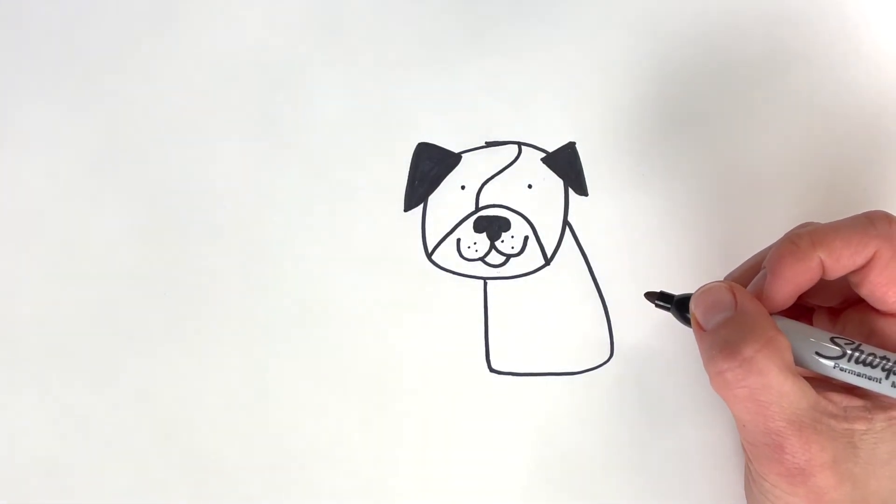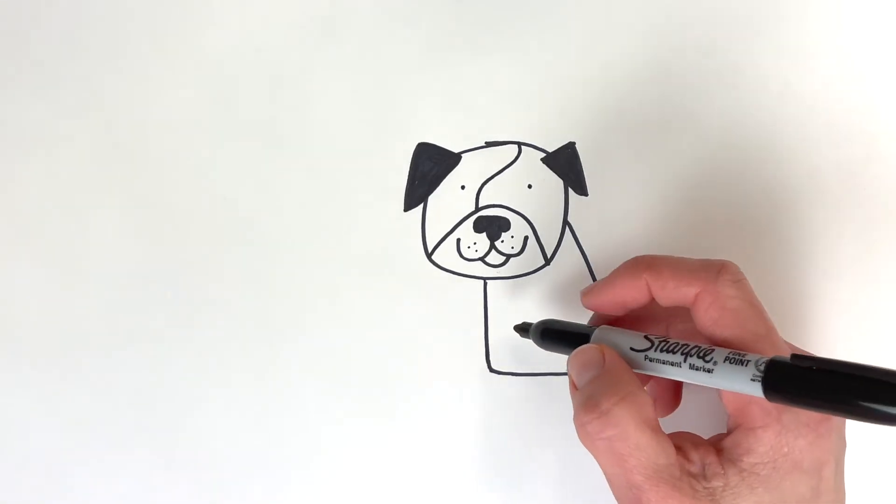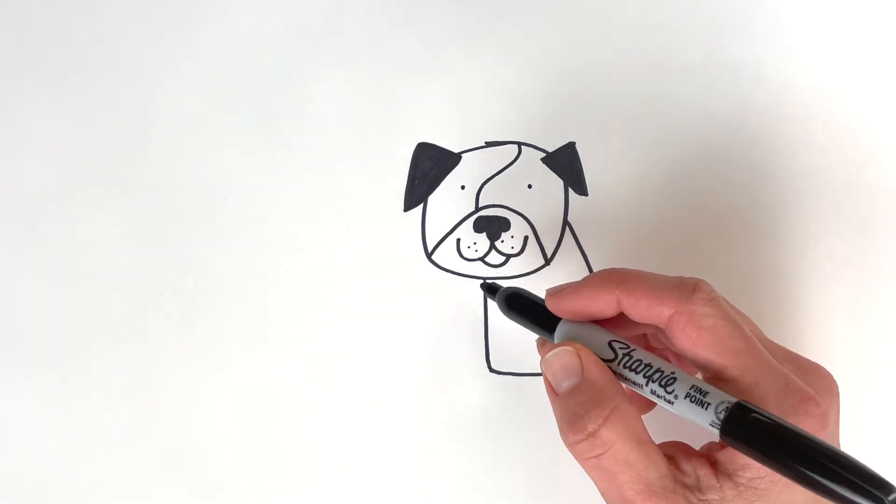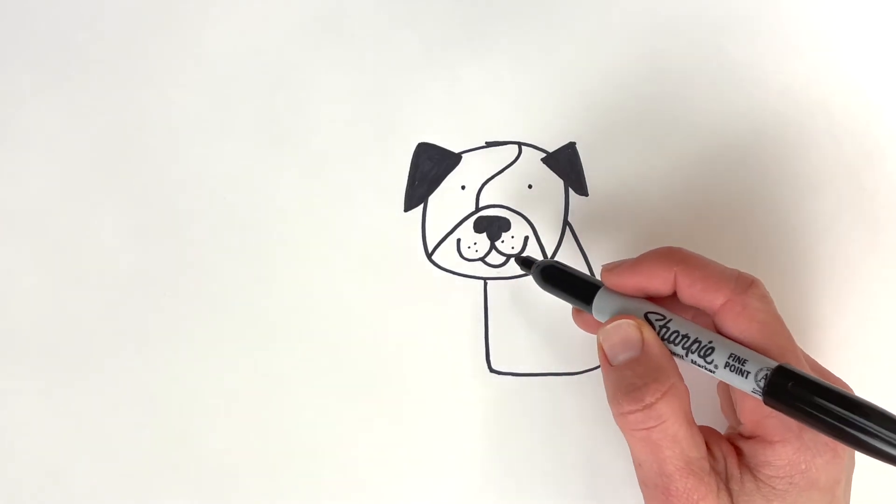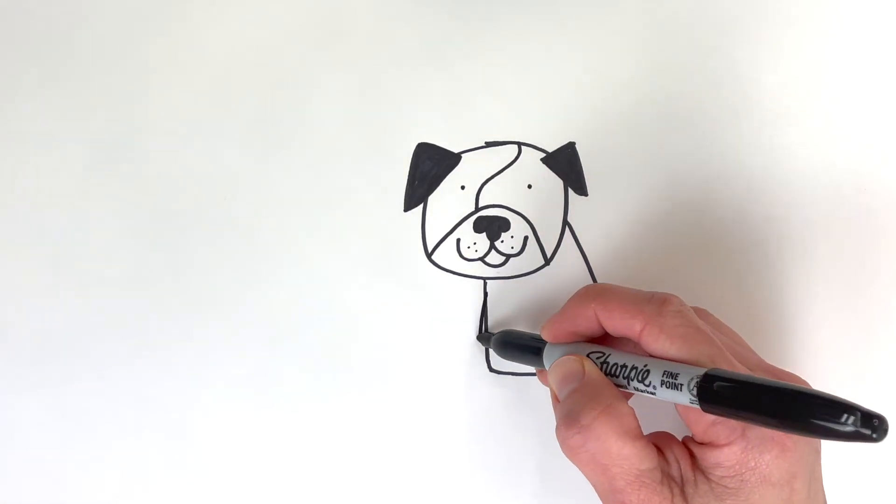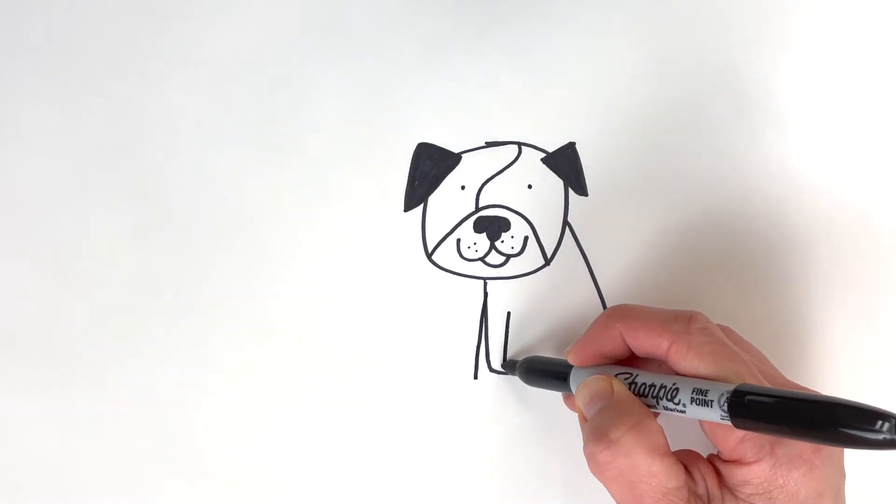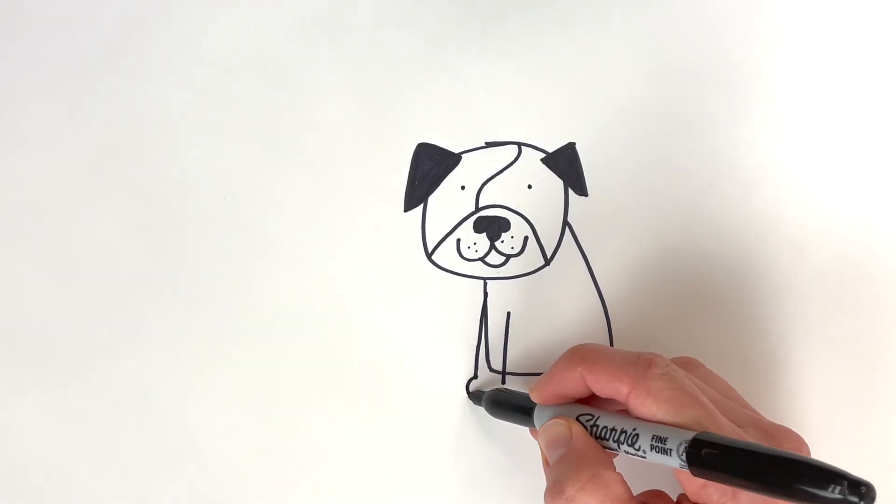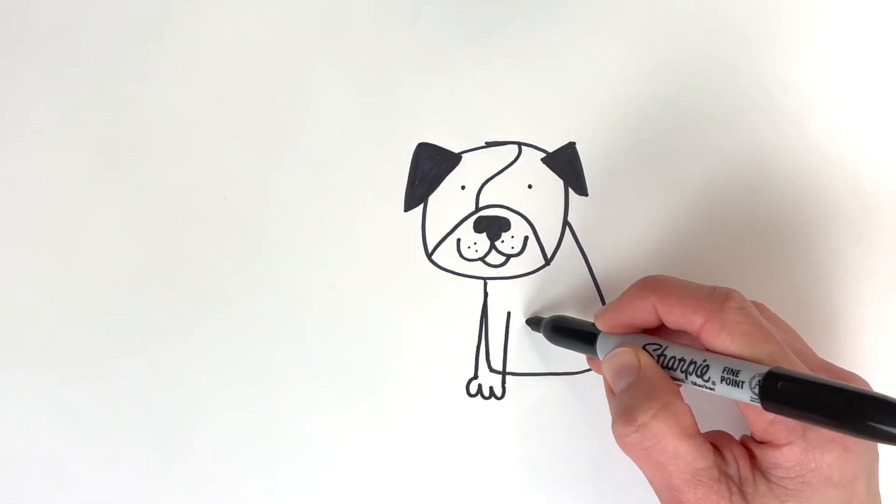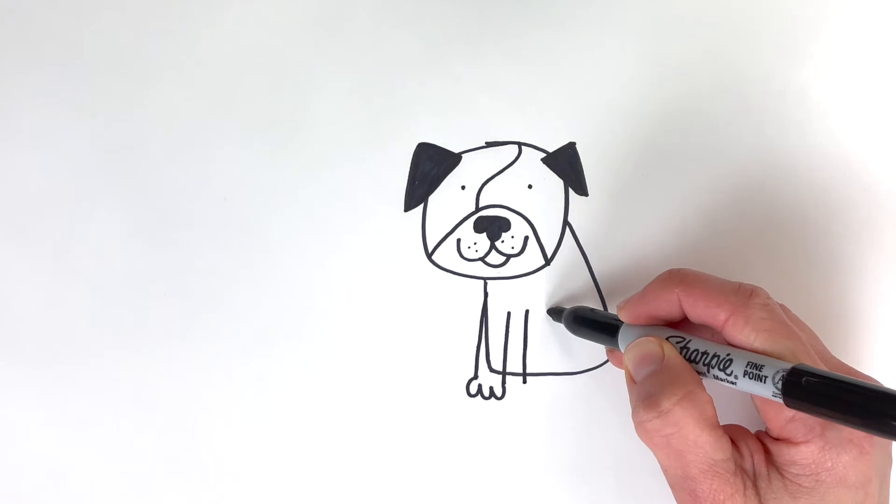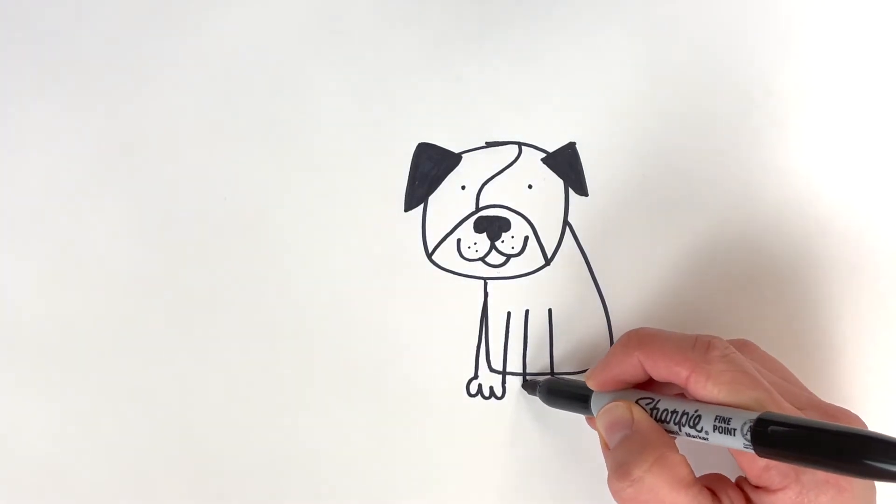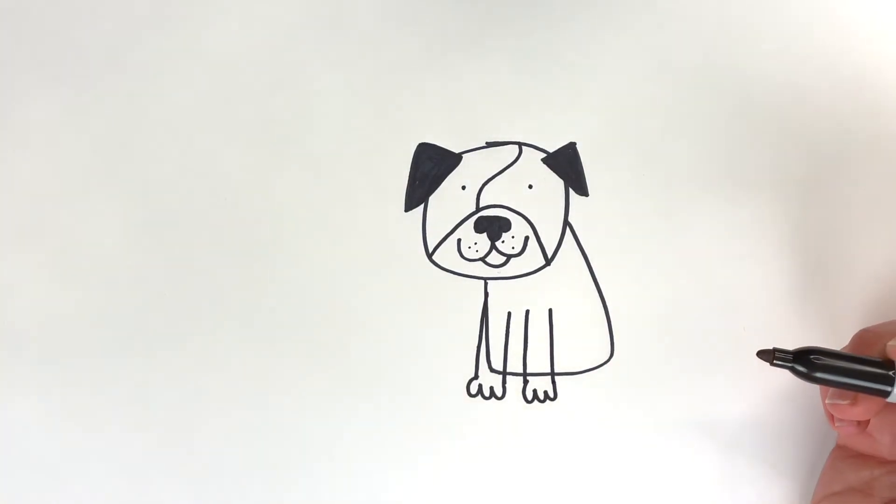Let's give this pup some arms. So I'm going to actually do one of the arms sort of coming out a little bit like this. A little bit in front of him. And the other one just next to it like that. Cute.